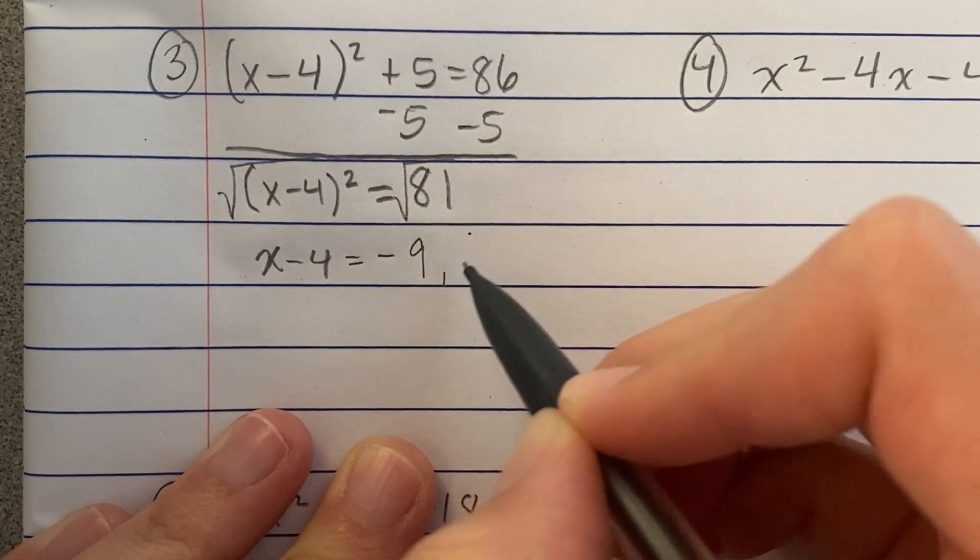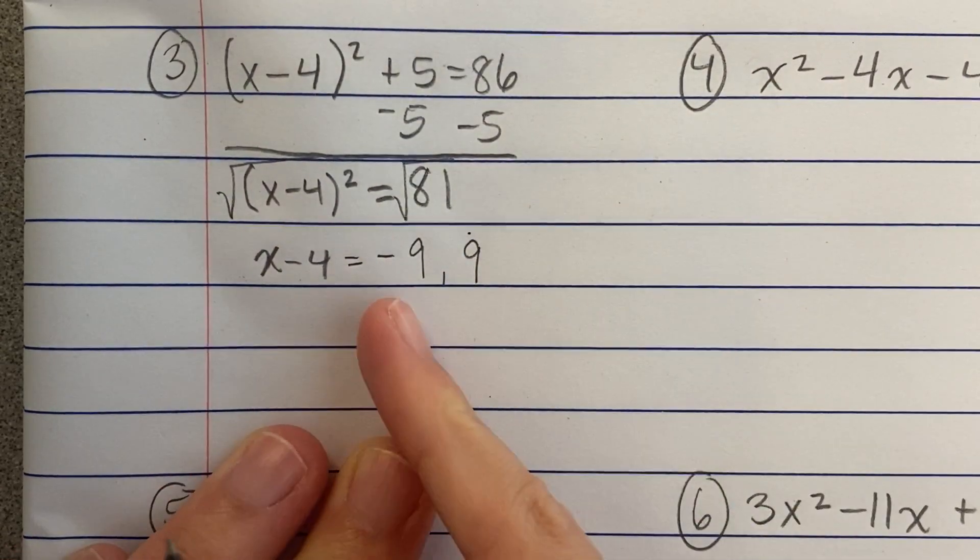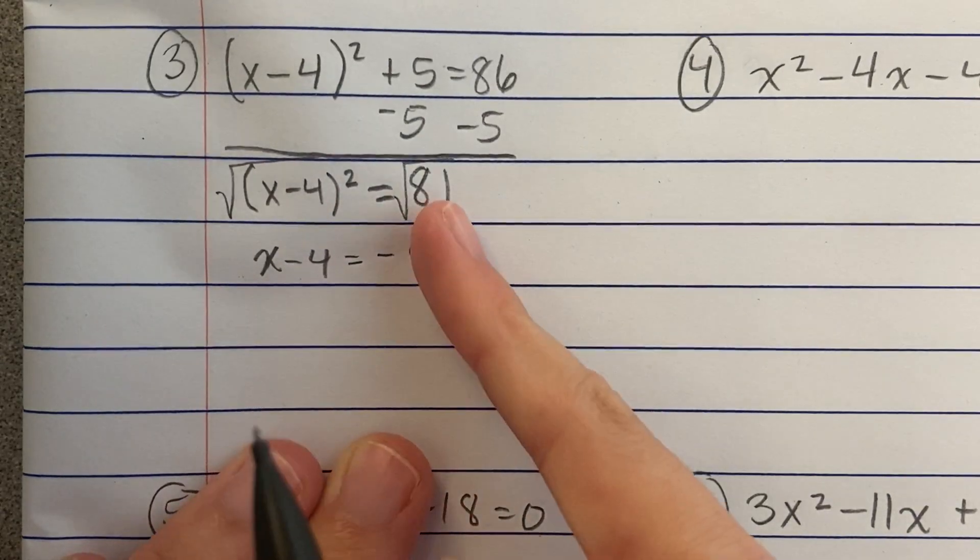And the square root of 81 is negative 9 or positive 9, right? Because negative 9 times negative 9 is 81, and positive 9 times positive 9 is 81.